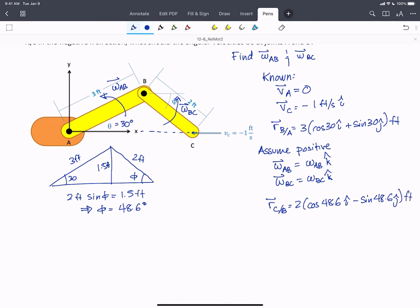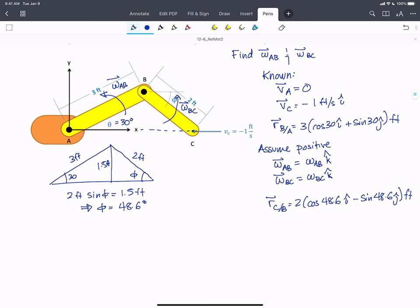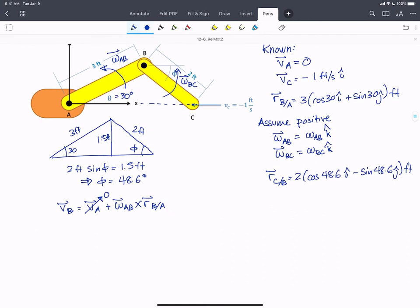Great. So now we have all of our knowns and all of our assumed vectors and we can move forward to solve. So just like in the last problem, we're starting at A and looking at the velocity of B and then go stepwise from B to C and then put it all together to find our final value. So we start with the equation VB equals VA plus omega AB cross RB with respect to A. VA we know is 0 because it's pinned. So now we have an expression for VB.